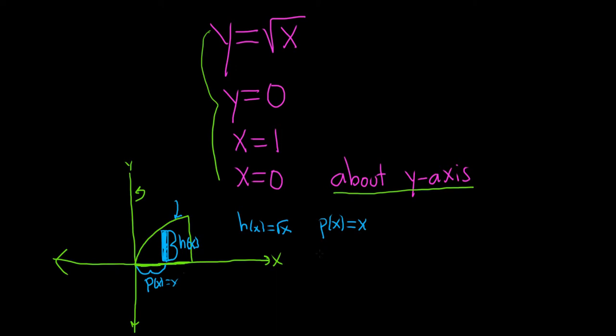So now we can set up the integral that will give us the volume. So the volume is equal to 2 pi, because shell has the 2 pi. And we're going from 0 to 1, left to right, integrating with respect to x. And it's p times h. So it's x times the square root of x dx. So this is the integral that will give us the volume.